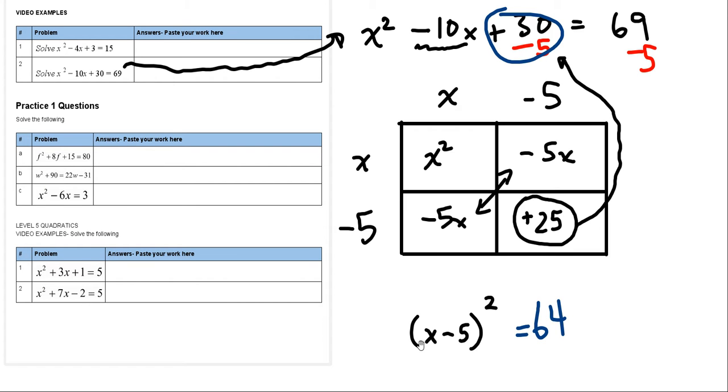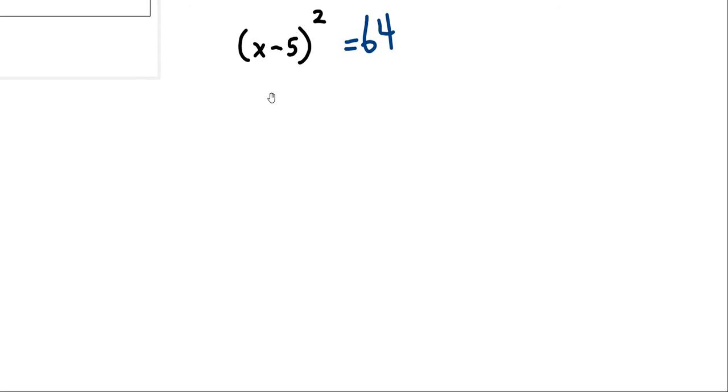Well doesn't that appear to be nice because now we've got the situation we have a perfect square and conveniently a perfect square. We're gonna undo the squares. Okay. By square rooting. So we have x minus 5 equals the square root of 64 is 8. Or we've also said before x minus 5 equals negative 8.